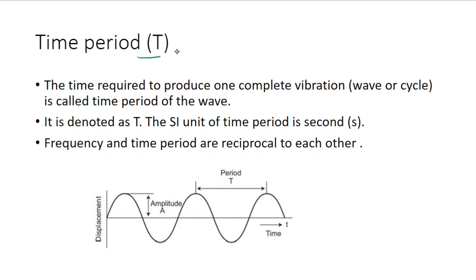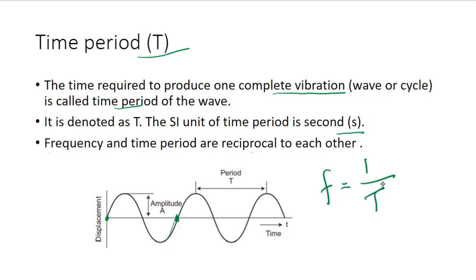Now, time period. The time required to produce one complete vibration is known as the time period. One complete cycle consists of one positive half and one negative half. Time period is represented in seconds. Frequency and time period are reciprocal to each other: f = 1/T.